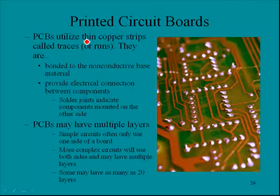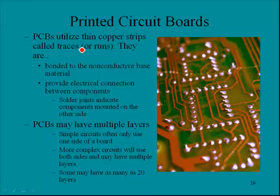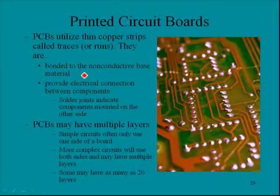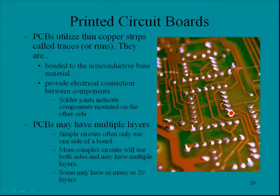Printed circuit boards utilize thin copper strips called traces, sometimes referred to as runs. In this picture, the copper lines are the copper wires, which we refer to as runs. They are bonded to the non-conductive base material and provide electrical connections between components. The solder joints indicate components mounted on the other side of the board.